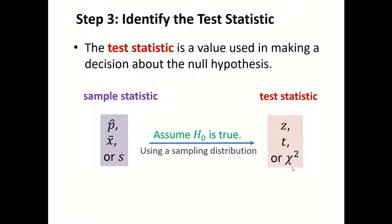Remember, this is all under the assumption that the null hypothesis is true. Once we find the test statistic, we can use it to find the area in the tail and decide if your sample data is extreme or not extreme.